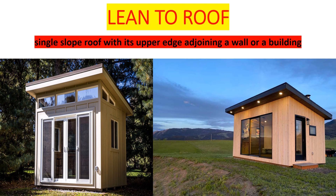Hi guys, welcome and welcome back again to Engineer Teen Academy. Today we want to look at the lean-to roof — a type of roof that has a single slope with the upper edge adjoining to the building or the wall. As you can see in this picture, this is what we call a lean-to roof. We want to look specifically at how to calculate the number of iron sheets for this particular type of roof. We've done the pitch roof, the gable, the hip roof, and today we look at the lean-to roof. It's similar to the flat roof but it's not a flat roof.